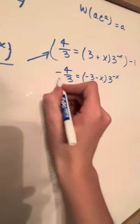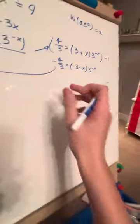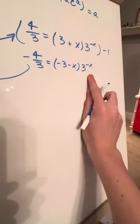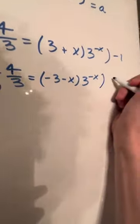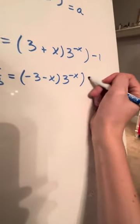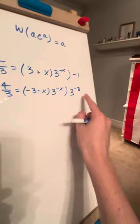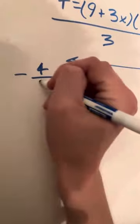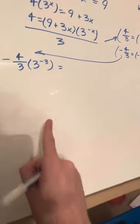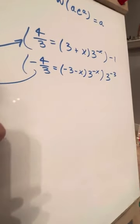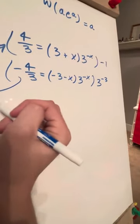So now what do we want to do? We need to multiply this entire thing by 3 to the power of negative 3 to add these exponents using our exponent rules. In this case we get negative 4 over 3 times 3 to the power of negative 3. Now we're going to have (negative 3 minus x) times 3 to the power of negative x minus 3.